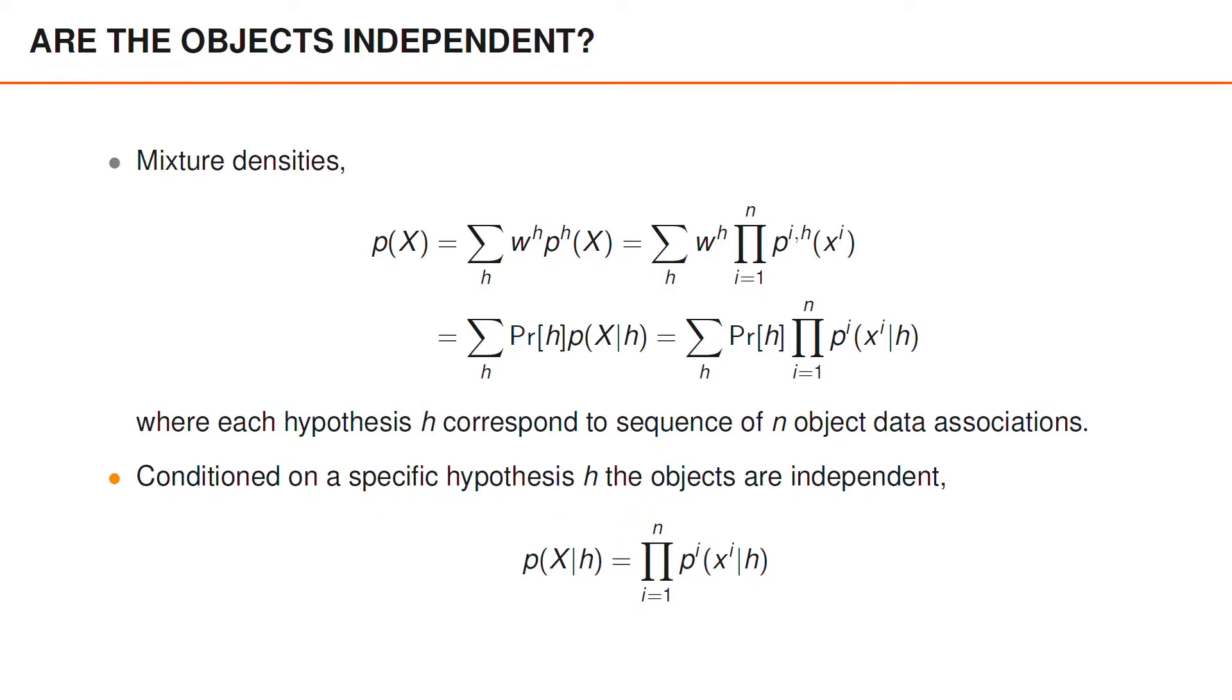because conditioned on the hypothesis, the n-object density is a product of the individual densities for each object. However, this is for a given hypothesis.